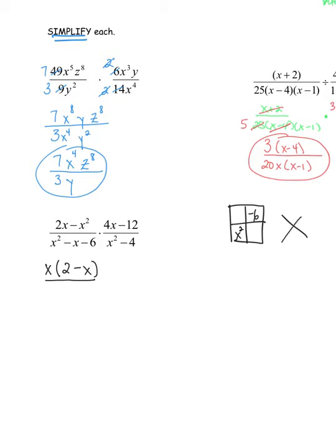Multiplying x² by −6 goes to the top of the diamond, and the middle term −x goes to the bottom. I need two numbers that multiply to −6x² and add to −x — that's −3x and +2x. In the generic rectangle, the bottom row x² and −3x have a GCF of x; and 2x and −6 have a GCF of 2. So the denominator factors into (x − 3)(x + 2).